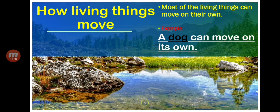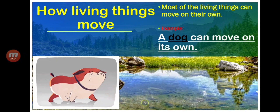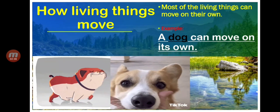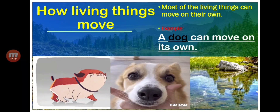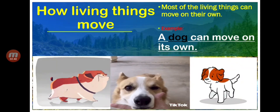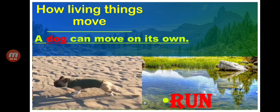Our topic again is all about how living things move. Most living things can move on their own. The first example is a dog — a dog can move on its own. Look at the dog, so cute! The dog is moving on its own. A dog can move on its own by running.